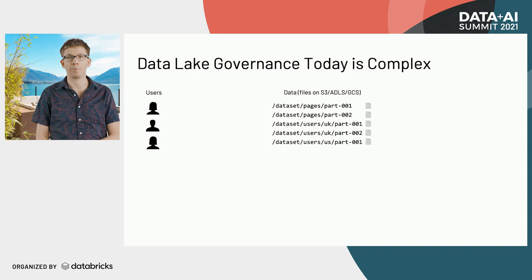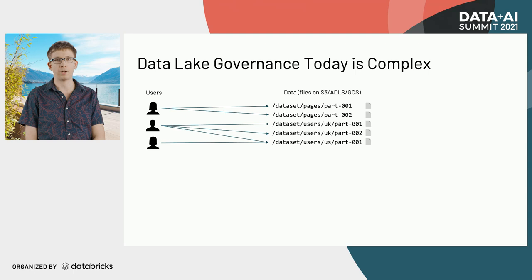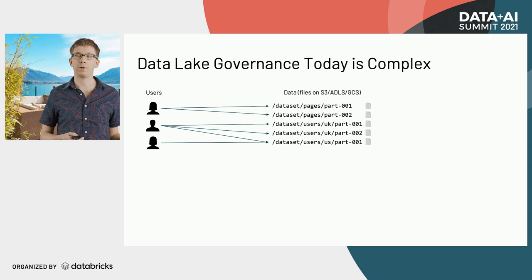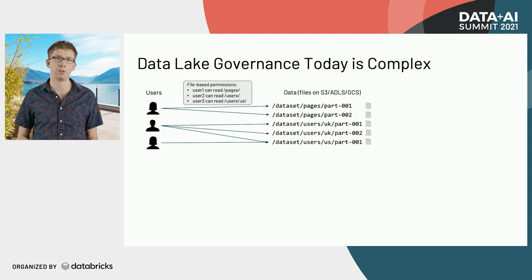For example, if we want to limit which users can get access to which of the data sets here, we would have to look around and somehow make a rule about which user can access which underlying files and how those files map to the business rules we're trying to set up — like, this is only about US data or UK data. When you set the permissions in these systems, you have to give file-level permissions, which are about the low-level physical structure of the data.